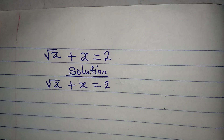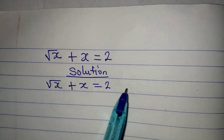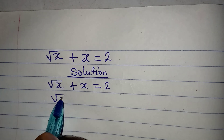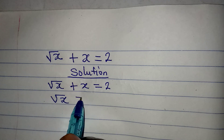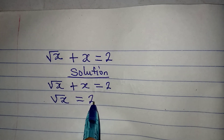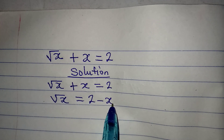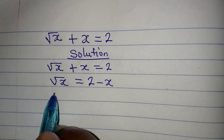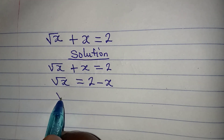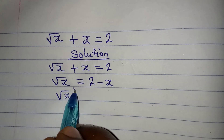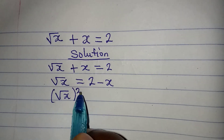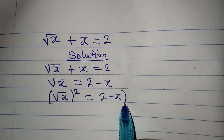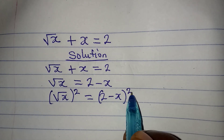The first step is to take x to the other side, so we have square root of x as the subject, equal to 2 minus x. The next thing is to take the square of both sides to eliminate the square root, giving us (2 minus x) all squared.